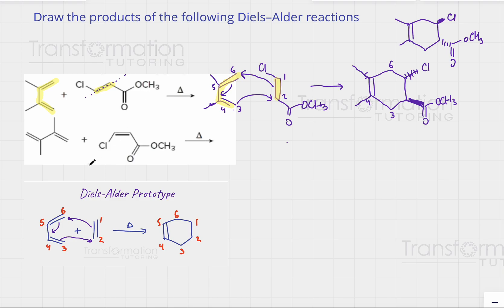Now let's look at the second Diels-Alder example. What do you do first? Identify the diene and dienophile. I see double, single, double — that's my diene — and a double bond, that's my dienophile. Notice my diene is not in its best conformation; we want the two double bonds to be on the same side next to each other. This is called S-cis conformation. If they're not, we have to twist around the single bond so they are on the same side.